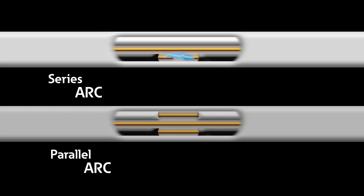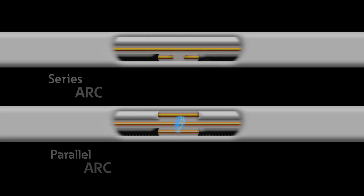Arc faults are often referred to as series or parallel arcs. A series arc occurs in one conductor and is a low level of current, which is in series with and limited by the load — it is often the result of a bent or broken wire. A parallel arc occurs between two parallel conductors and is a higher level of current because it is in parallel with and therefore not limited by the load. It can occur when nails or staples are driven through wires.